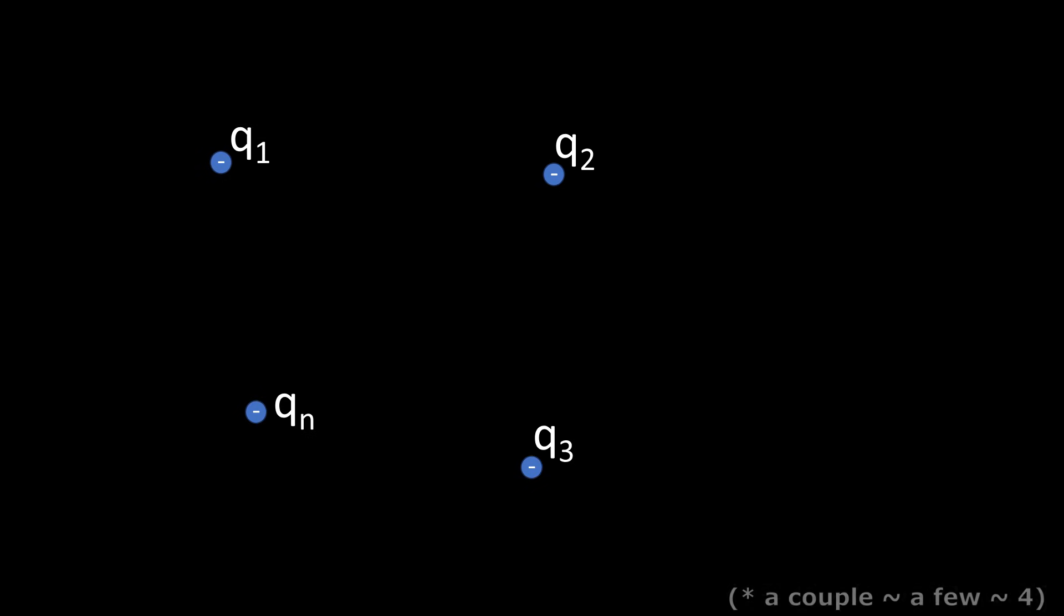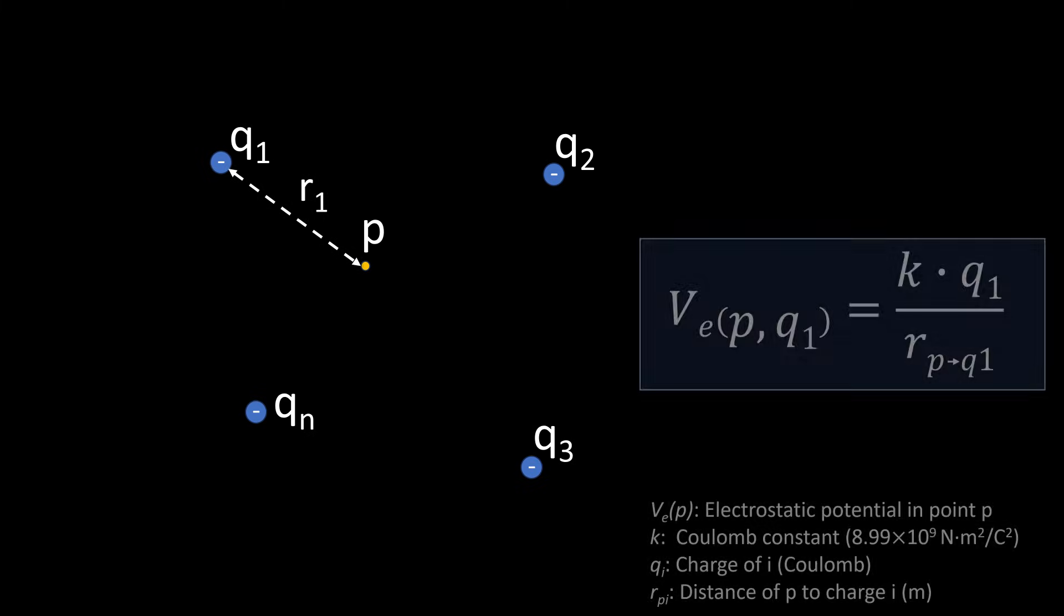Say we have a couple of charged particles distributed in space. For this case we will assume that they all have negative charge. And from this charge distribution in space, we can calculate the electrostatic potential for each point as follows: We take the contribution of each charge to the potential value in point P, which is equal to the amount of charge divided by the distance to the particular charge times a constant, which is called the Coulomb constant. And it is this constant that relates the potential in volts to charge in Coulombs and distance in meters.